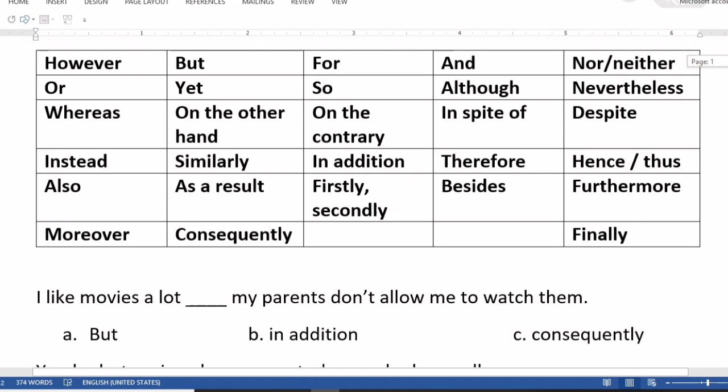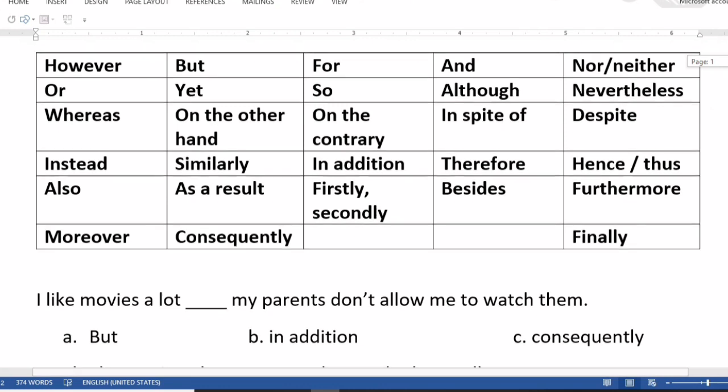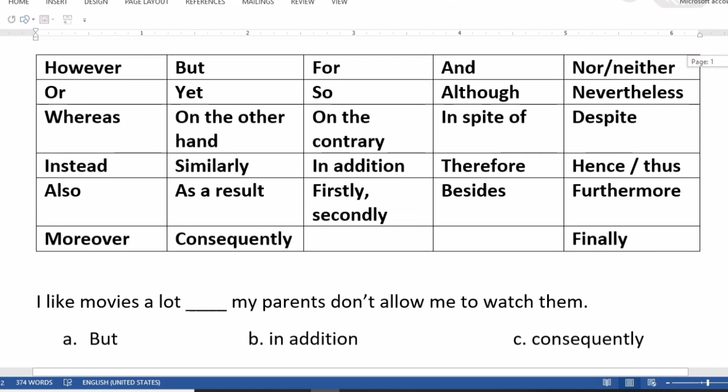As you can see on your screen, the connectives bank has been given to you. In these you have the most commonly used connectors: however, but, for, and, nor, neither, although, on the contrary, whereas, instead, moreover, furthermore.